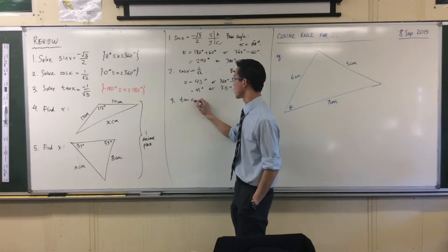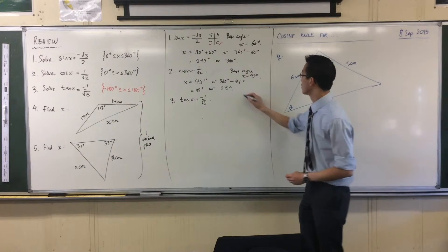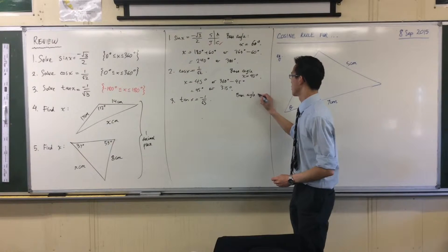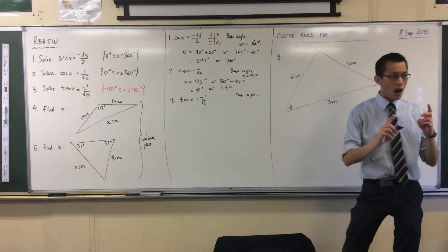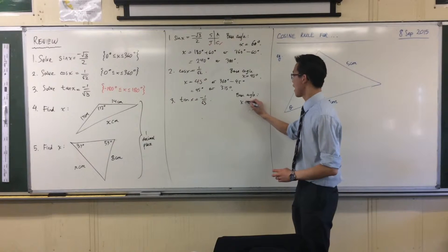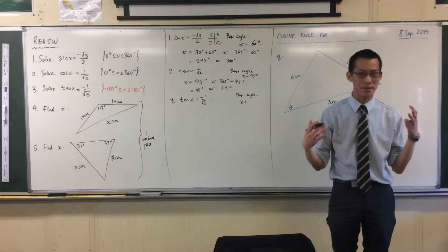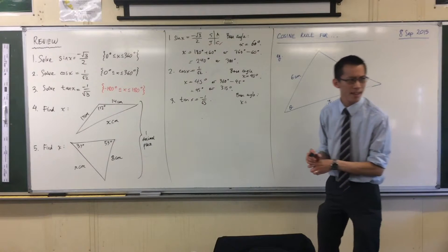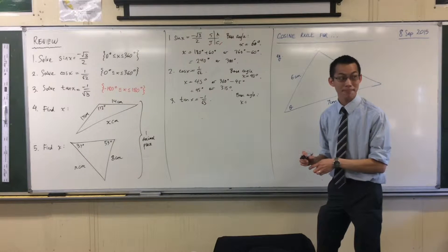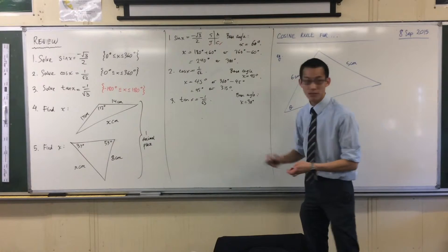Let's just start the way we did before. We say tan x equals this guy, right? We'll start by finding our base angle. I ignore the sign to find the base angle. If I do tan inverse of 1 over root 3, or if you remember the exact value, what do you get? 30 degrees, that's my base angle.